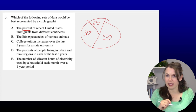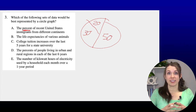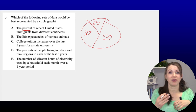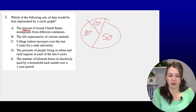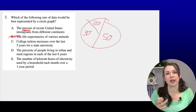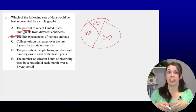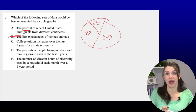Option B — life expectancies of different animals — won't work because a giraffe living 30 years and an elephant living 70 years don't add up to 100. Option C — college tuition increases over five years — also doesn't add up to 100. Even if percentages are used (like 1% increase one year, 6% another), they don't sum to 100, so neither B nor C works for a circle graph.